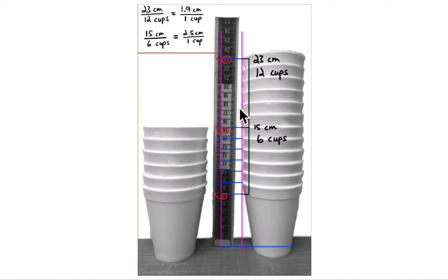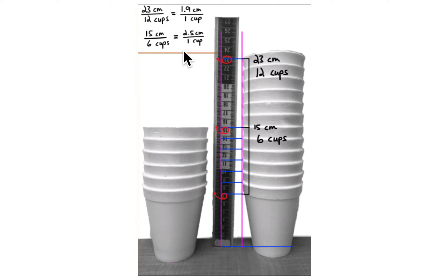Let's look at the ratios — another hint as to whether this is proportional. In a proportional relationship, the ratios of the two properties are always equal; that's the constant of proportionality. If it's not proportional, that ratio won't be constant. With 23 centimeters for 12 cups, that's 1.9 cm per cup. With 15 centimeters for six cups, that's 2.5 cm per cup. These ratios are different, so this is not a proportional relationship — but maybe it's still a linear one.